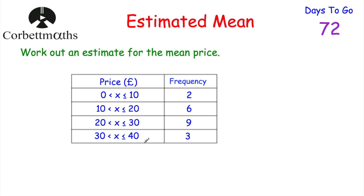This table shows us the price of some items. We've got two items that cost more than £0 but less than or equal to £10, six items between £10 and £20, nine items between £20 and £30, and three items between £30 and £40. We've been asked to work out an estimate for the mean. We can't find the actual mean because we don't know the actual prices - they might be £1 each or £9.99, we're not entirely sure.